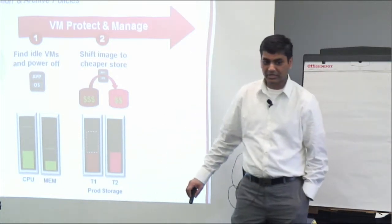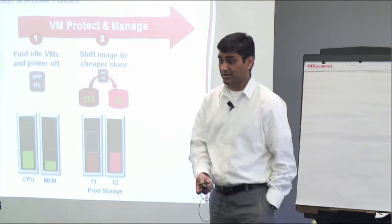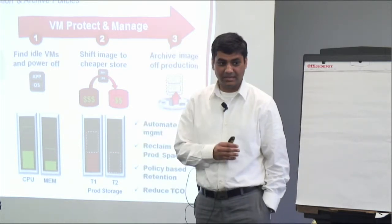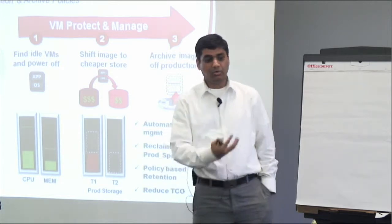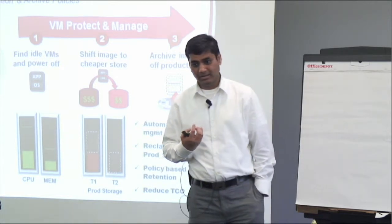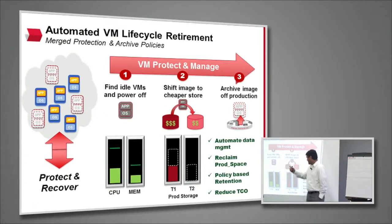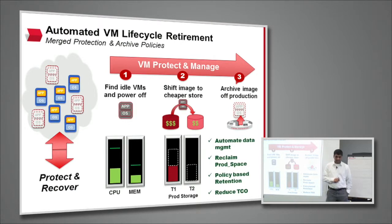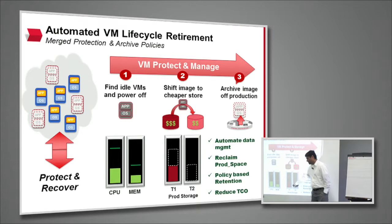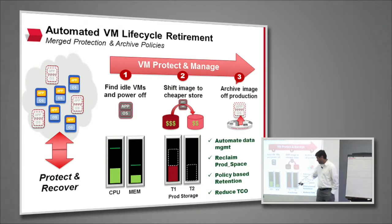Once it's sitting on tier two, migrated and still not being used for a while, we ask: why is it even sitting on my VM infrastructure? We go back in and pull only the VMDK — the virtual machine still exists in the vCenter context, but we take the VMDK and put it into our content store repository in the back end. We've freed up CPU cycles, freed up IOPS on tier one, and as a last step, moved it completely off to archive storage.